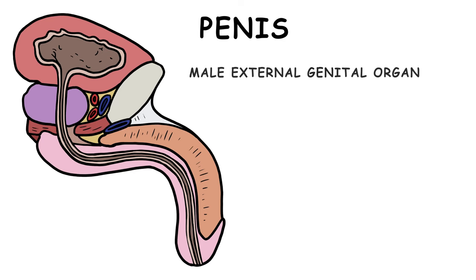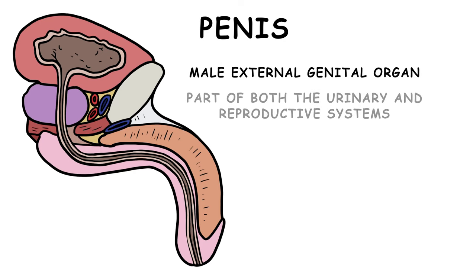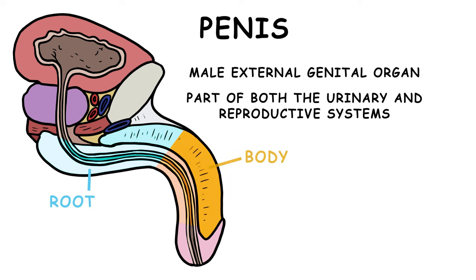The penis is a male external genital organ which is part of both the urinary and reproductive systems. The penis can be divided into three parts: the root, body, and glands.